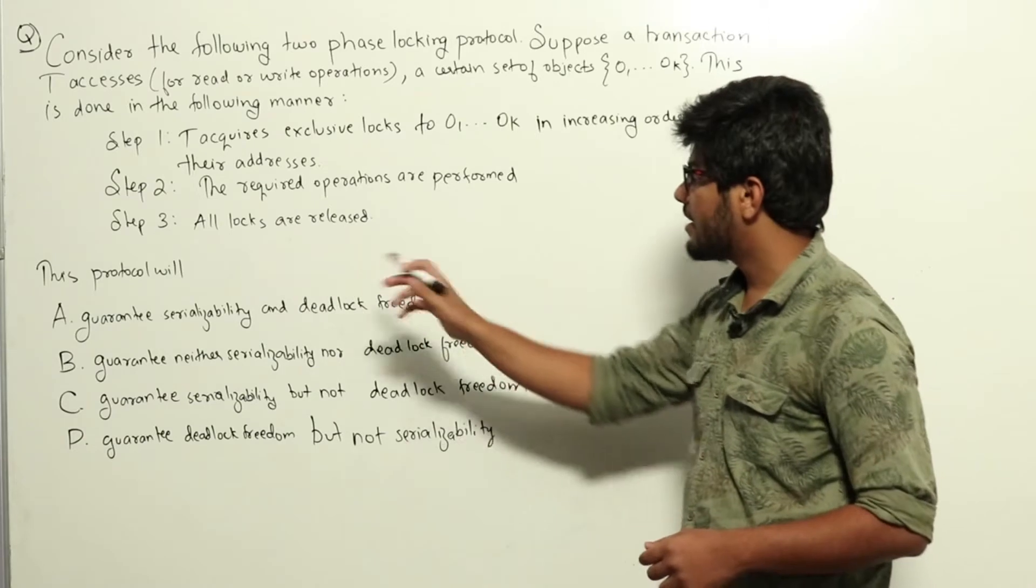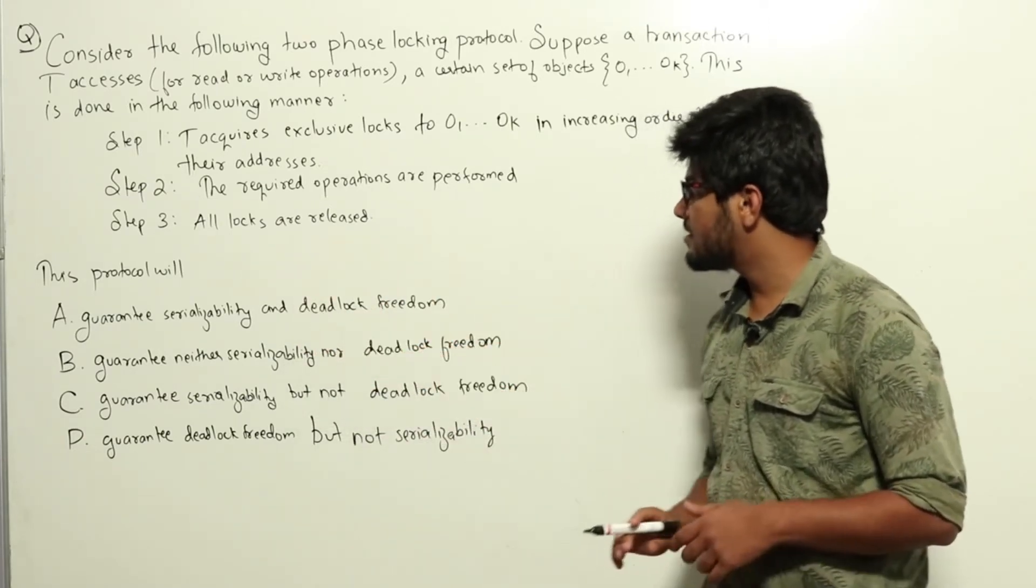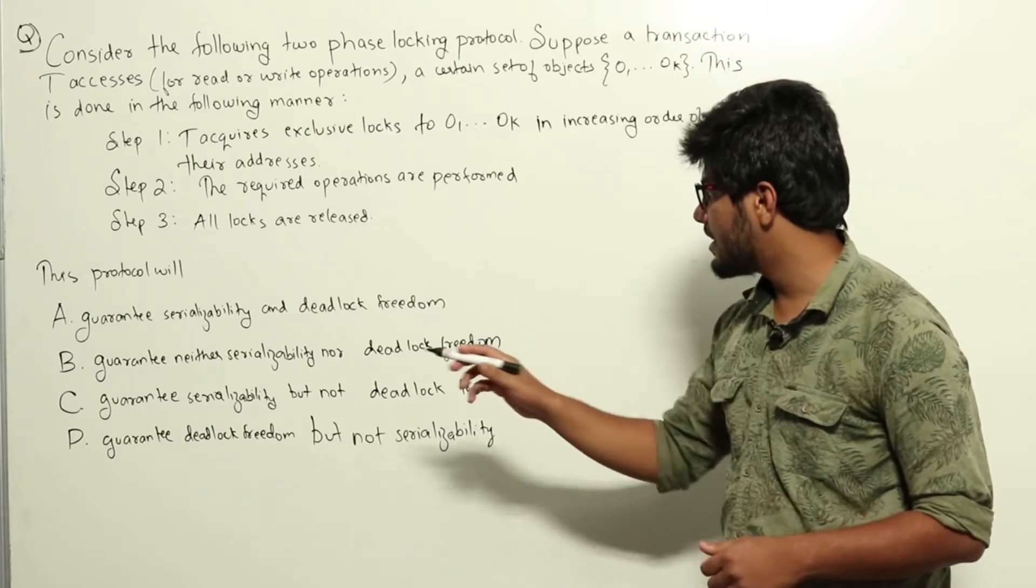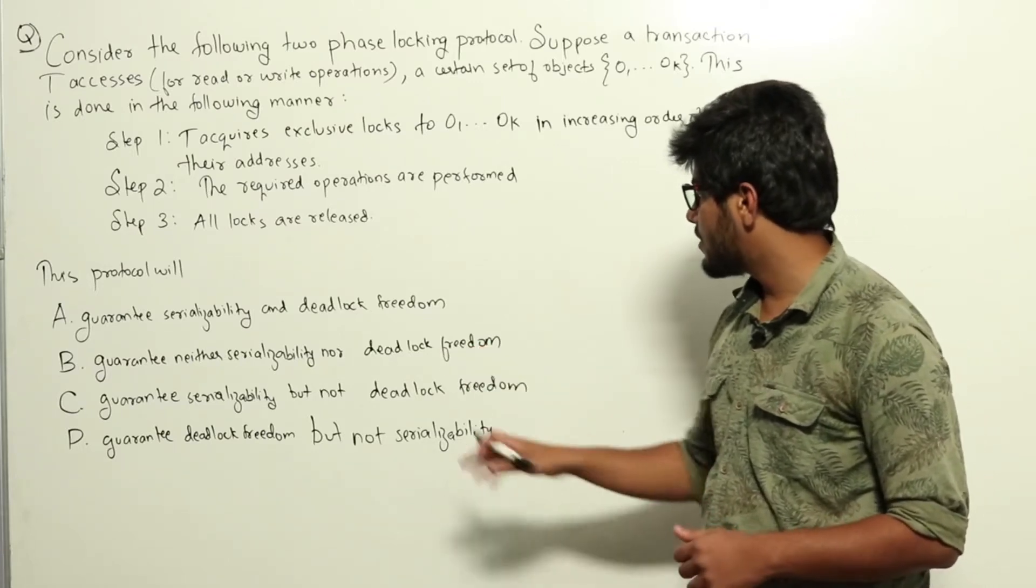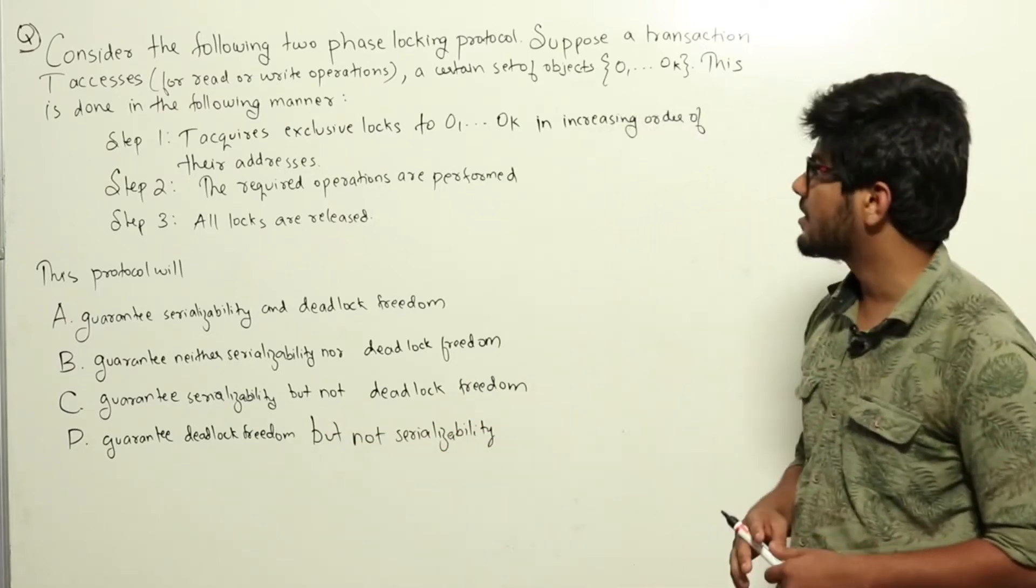The protocol will: A. Guarantee serializability and deadlock freedom. B. Guarantee neither serializability nor deadlock freedom. C. Guarantee serializability but not deadlock freedom. D. Guarantee deadlock freedom but not serializability.